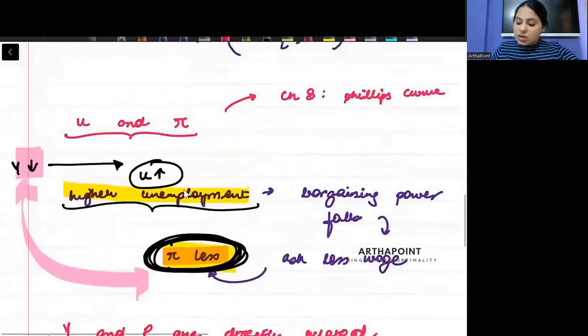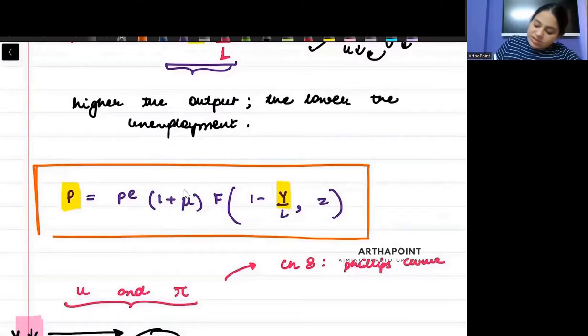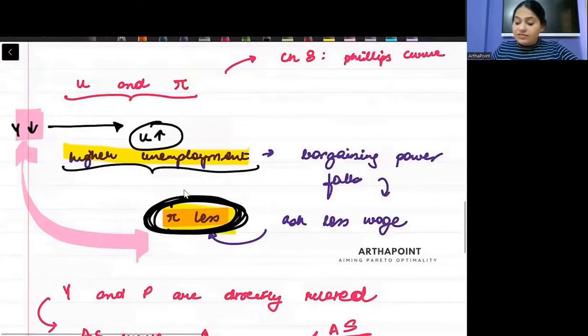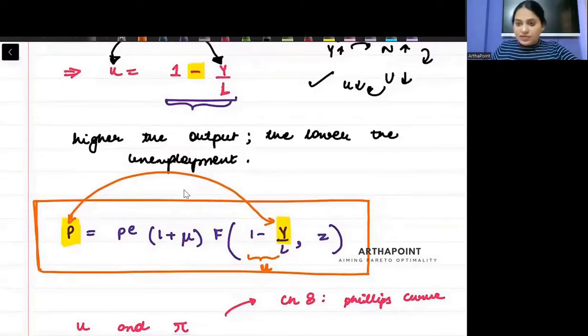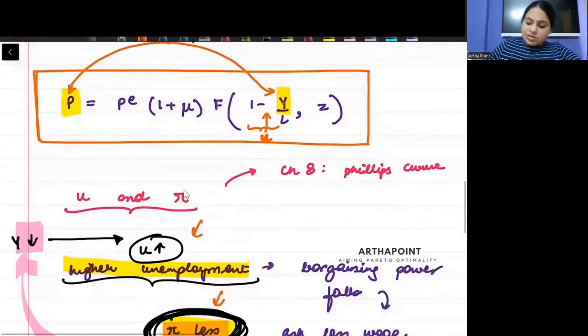So this equation that you have here, this is giving me that same relationship. But don't go by this negative sign. This negative sign represented U. This came in place of U. And unemployment and P have an inverse relationship. So if U and P have an inverse relationship, and U and Y also are negatively related, then P and Y are positively related.